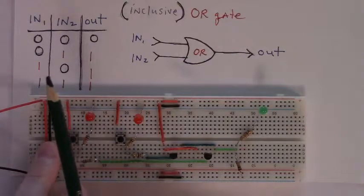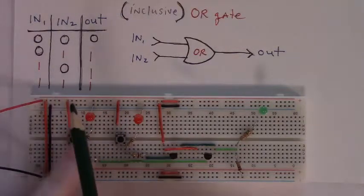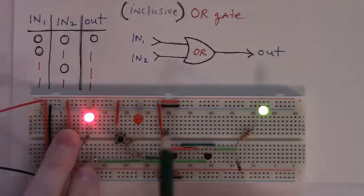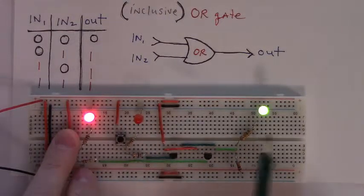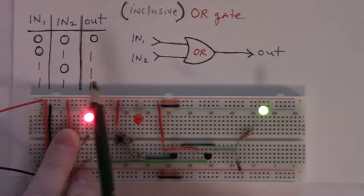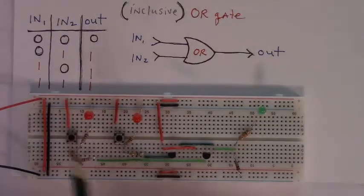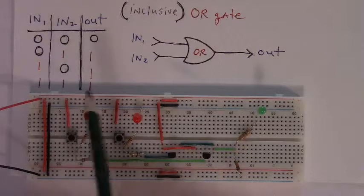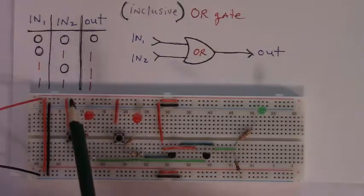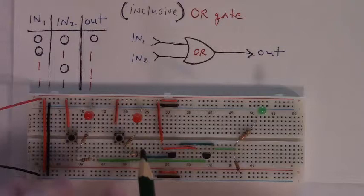Moving to the third row in its table, input 1 is high, input 2 is low, and its output should be high. Moving to the fourth row in its truth table, input 1 is high, input 2 is high, and the output should be high.